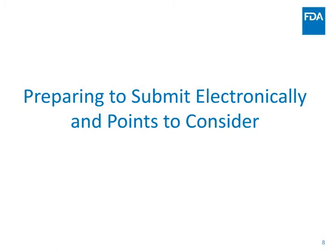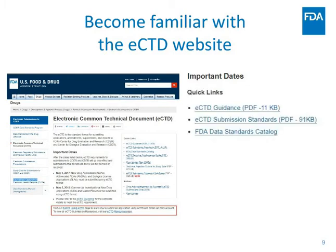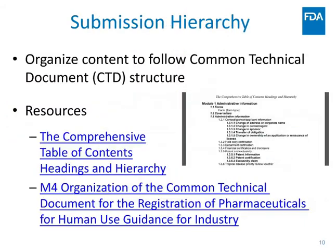Now I want to talk about preparing to submit electronically and things to think about as you're beginning the process. Number one: definitely become familiar with the ECTD website. It has important dates and deadlines, a quick link section where you can quickly access the ECTD guidance, the ECTD submission standards, and the FDA data standards catalog. It also has a notices section where new updates to acknowledgements or guidance are posted. At the bottom of the ECTD landing page, there's a section about learning how to submit your application using ECTD and how to get a gateway account.